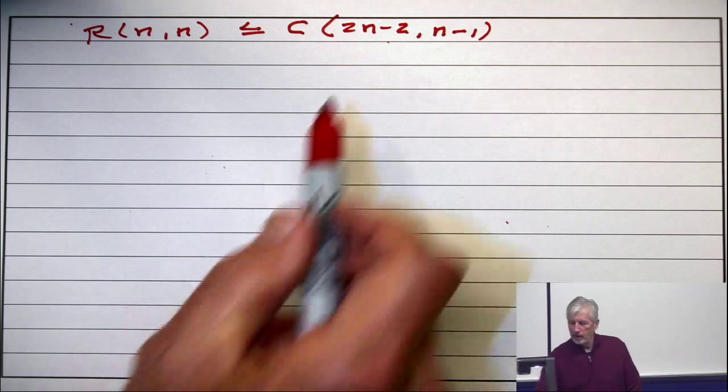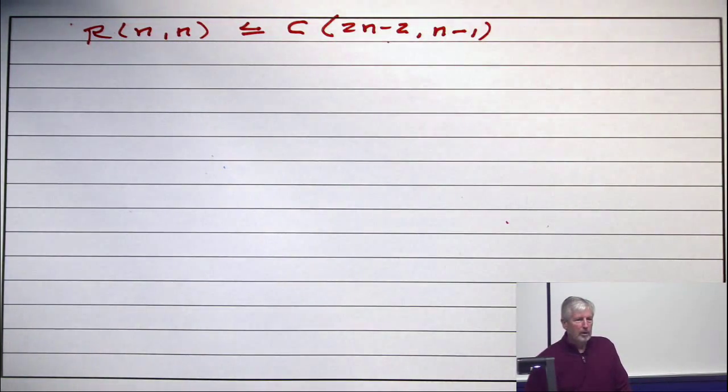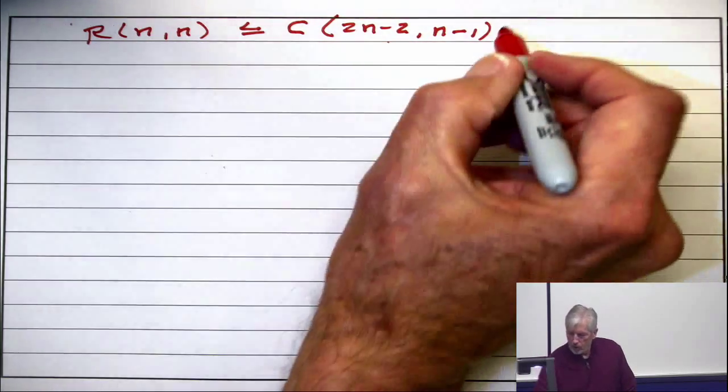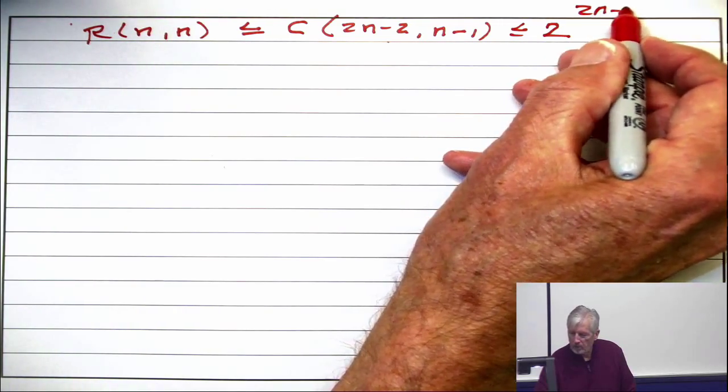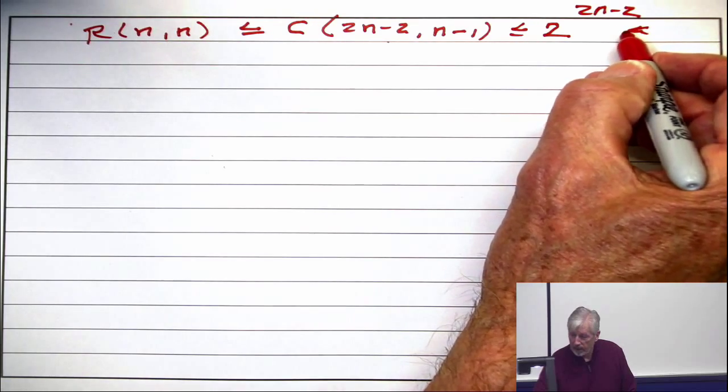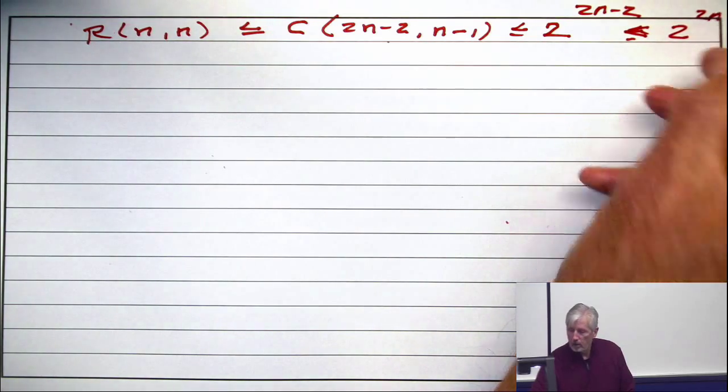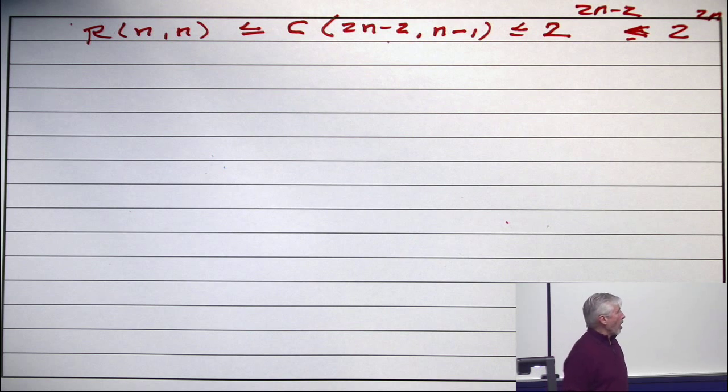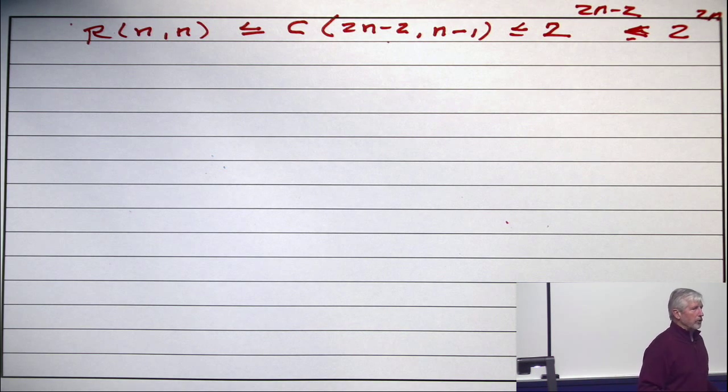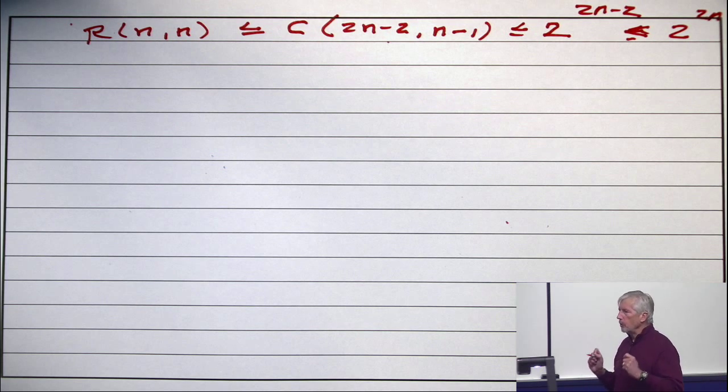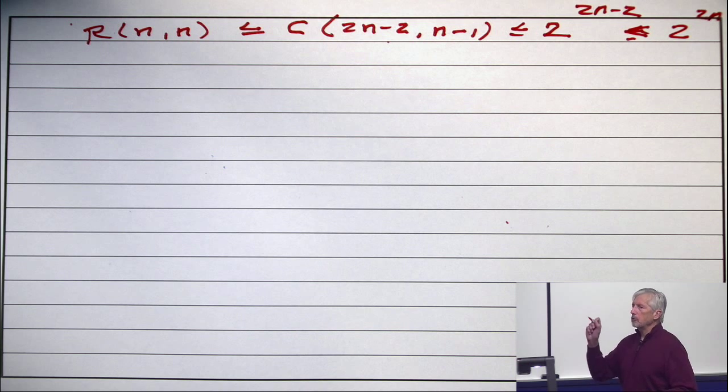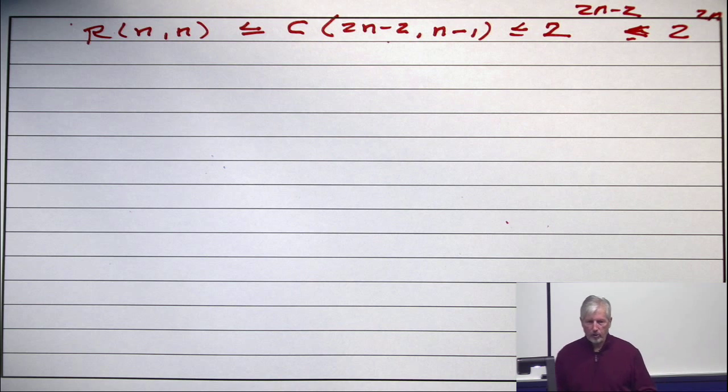But wait a minute. What are the binomial coefficients? Those are the number of subsets of a certain size. So this, in fact, is less than or equal to 2 to the 2n minus 2, and of course that's certainly less than 2 to the 2n. So the Ramsey number R(n,n) is no bigger than 2 to the 2n. I want to emphasize the 2n, not the 2 to the n. 2 to the 2n. So that's the upper bound.